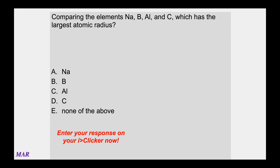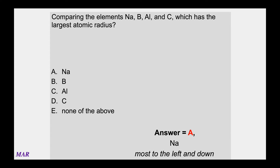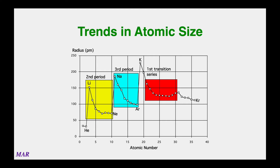If you compare sodium, boron, aluminum, and carbon — which one has the largest radius? You want to look for the atom that is most left and down. I won't give you trick questions where one is more left and another more down; I'll keep it fair. In this example, sodium is the most left and down, so sodium would be the biggest. The ranking would likely be: sodium biggest, then aluminum, then boron, then carbon smallest.